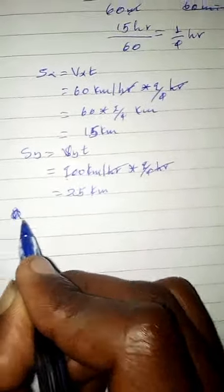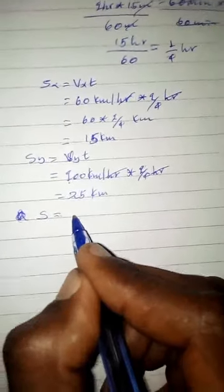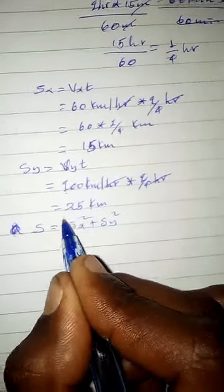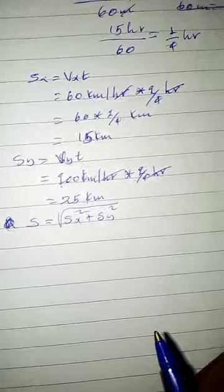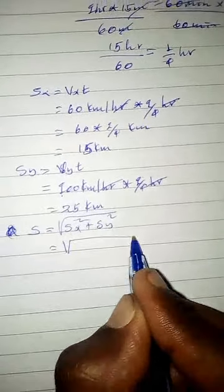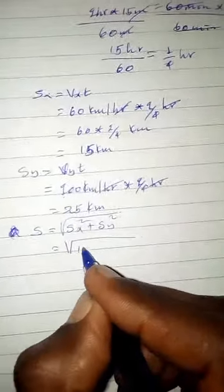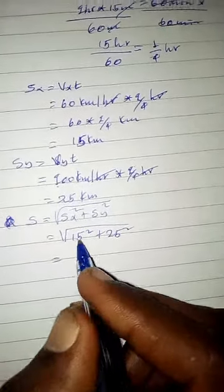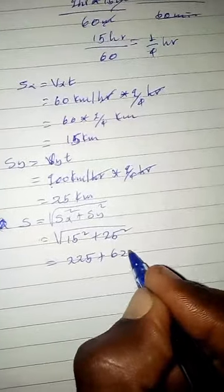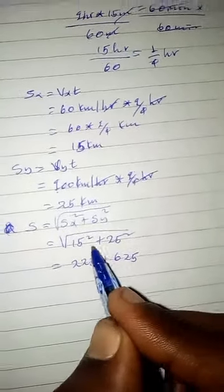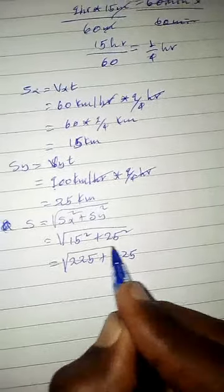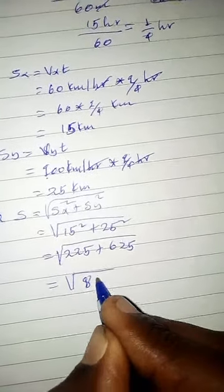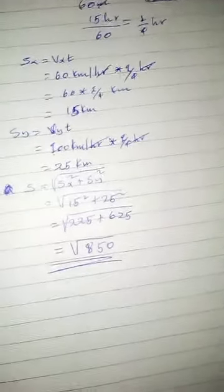The total displacement is found using S equals square root of S of x squared plus S of y squared. That's the square root of 15 squared plus 25 squared, which equals the square root of 850 km.